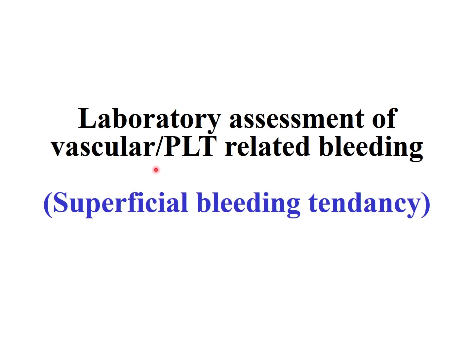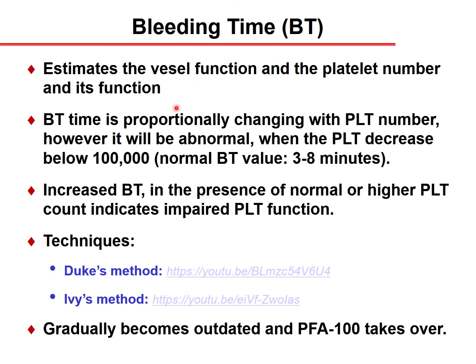For laboratory assessment of vascular and platelet-related bleeding, which usually causes a superficial bleeding tendency, the bleeding time estimates vessel function and platelet number and function. It is proportionally related to the platelet count, but becomes abnormal when platelets decrease below 100 giga per liter. Normal bleeding time is between 3 and 8 minutes. Spontaneous bleeding or petechiae occur in the lower extremities where hydrostatic pressure is highest.